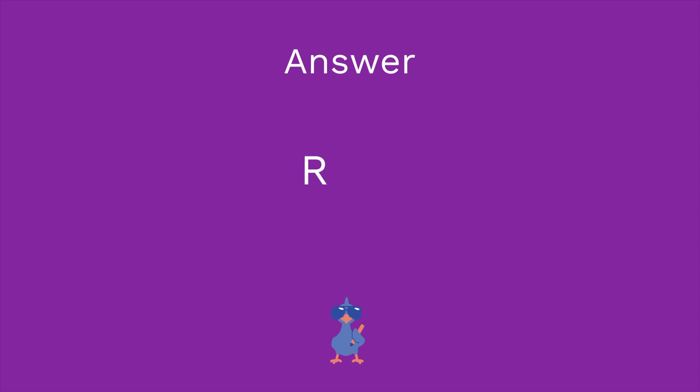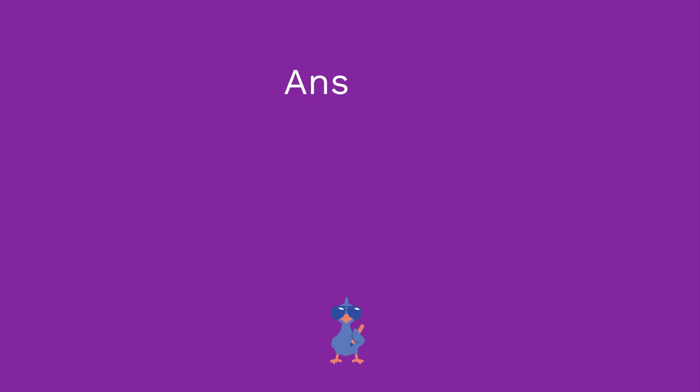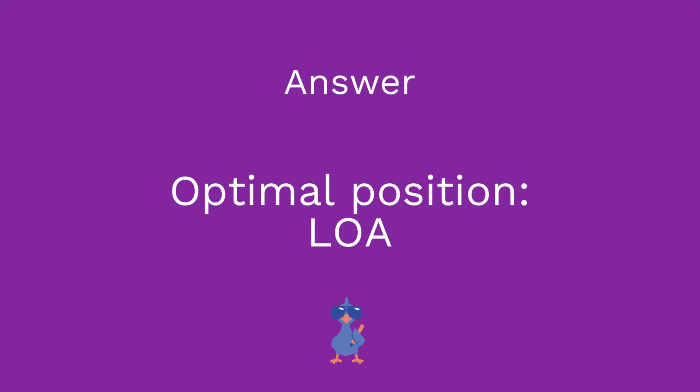Let's test your knowledge. If I said that you checked the patient and they were presenting ROP — what does that mean? Next question: what is the optimal presentation for the fetus for a well-facilitated birth? And last question: if I have a baby who is at the level of the ischial spines, what station are they at?